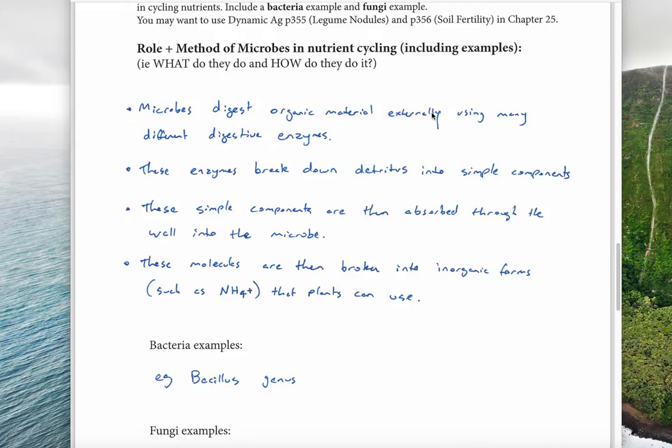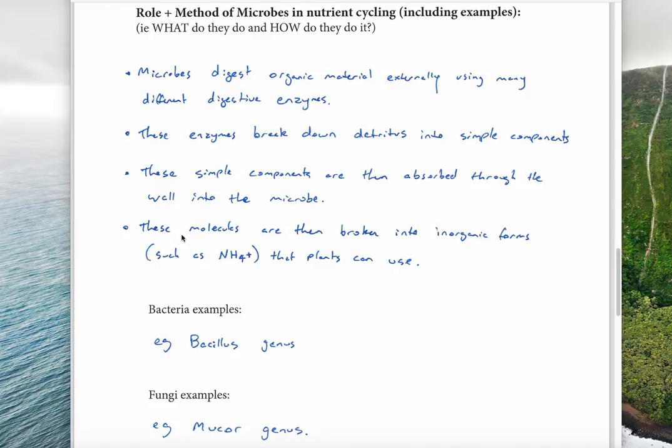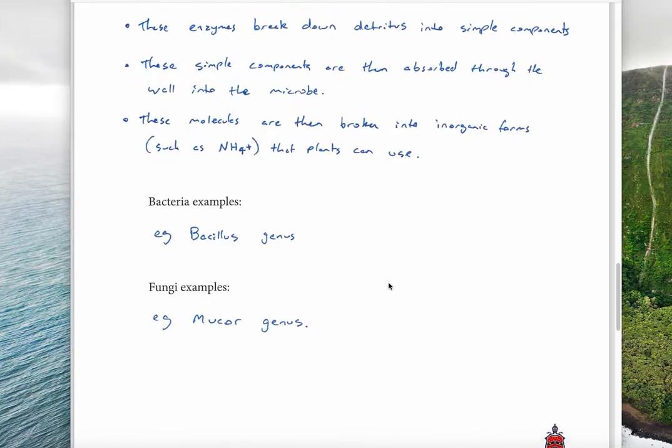Unlike invertebrates which take organic matter into their body and break it down, microbes break it down by excreting enzymes and breaking down the matter externally. The enzymes break down the detritus into more simple components, which are then absorbed into the wall of the microbes. Those more simple compounds are also available to other things such as plants. These molecules are broken into inorganic forms such as NH4+ that plants can use.